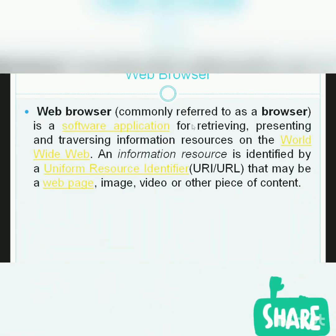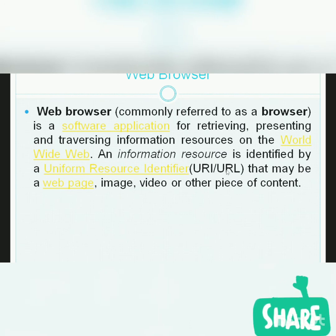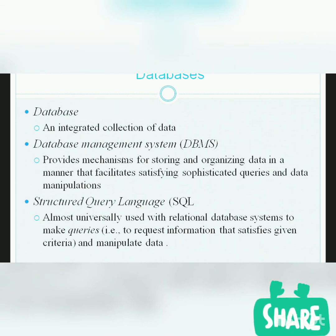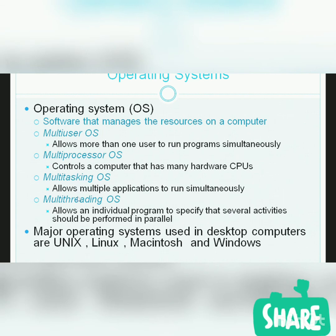A web browser is basically a software application for retrieving, presenting, and traversing information resources on the World Wide Web. Whenever you search for any information, you type a Uniform Resource Identifier or Uniform Resource Locator that locates your destination — whether that is an image, video, or whatever you request. We also require database software, and of course the basic requirement is the operating system — you must have an operating system in your system to get connected to the internet.